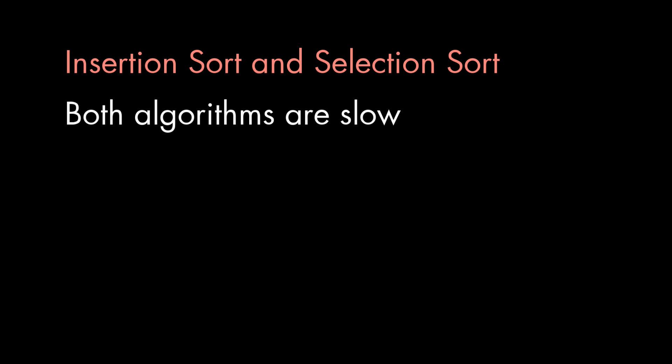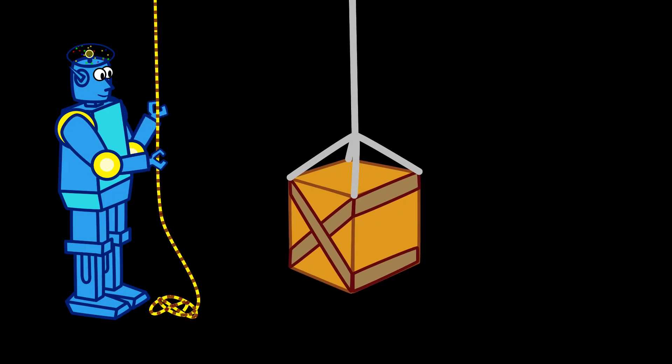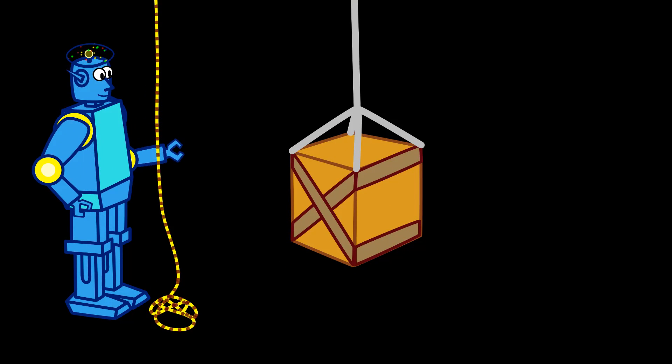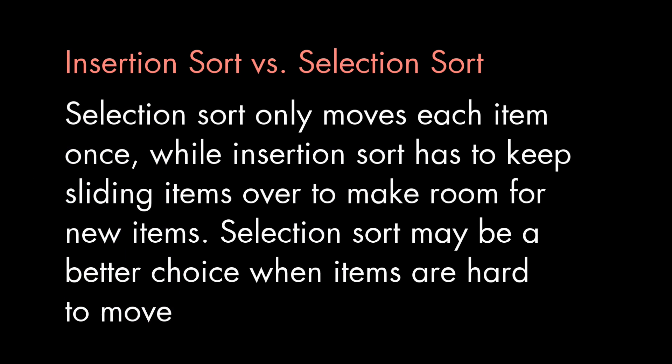But that doesn't mean we might not prefer one over the other in certain situations. Suppose the items you're putting in order are like really heavy crates. With selection sort, you'd only have to move each crate one time. But if you used insertion sort, you'd always be sliding the heavy crates down to make room for new ones. So when the item is tough work just to move, selection sort can be a better choice.